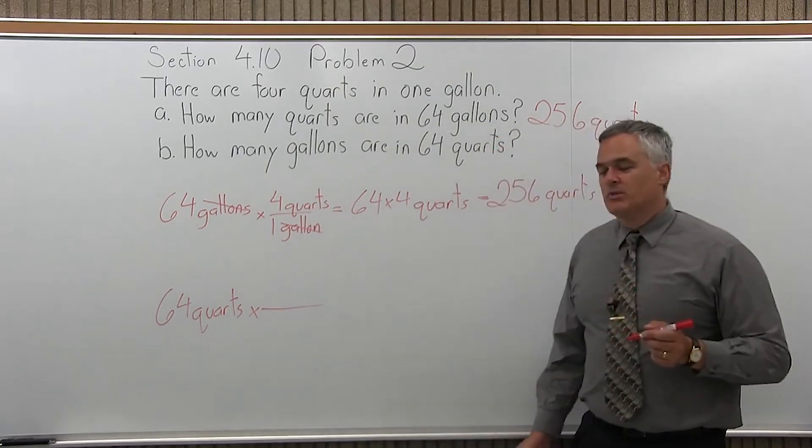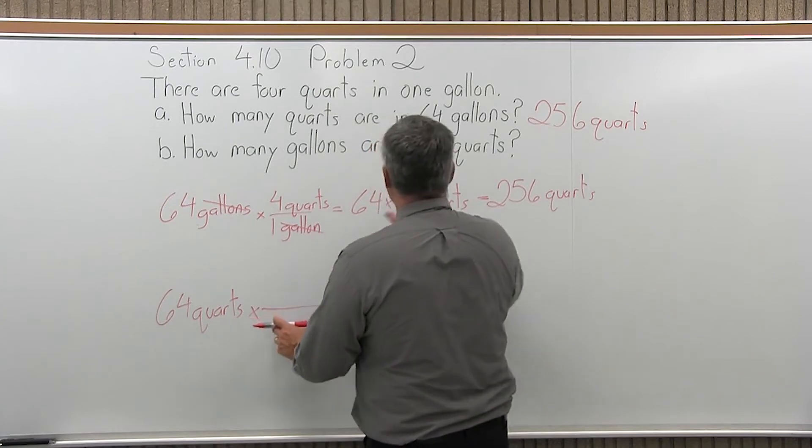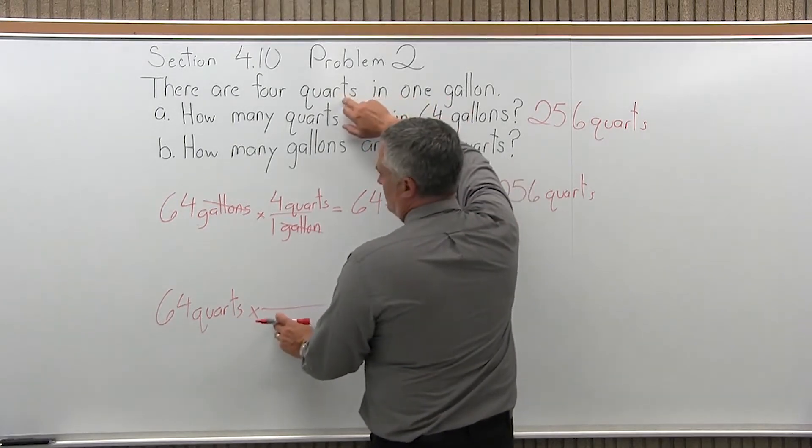So you're going to multiply it by a special one. You're going to have the same amount on the numerator and the same amount in the denominator. But the denominator has to be the units that you want to cancel.